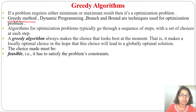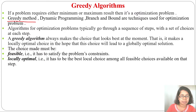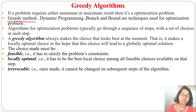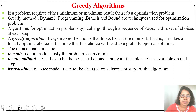Whatever is locally good may not be globally best. The choice must be feasible, meaning it has to satisfy the problem's constraints. It should be locally optimal, meaning it is the best local choice among all feasible choices available at that step. It should also be irrecoverable — once a decision is made it cannot be changed in subsequent steps of the algorithm; the decision is final.